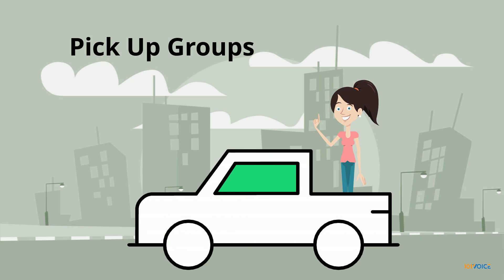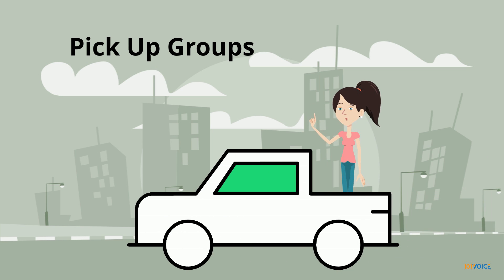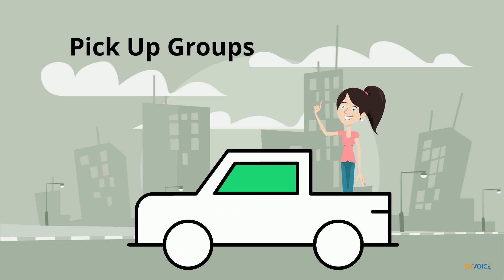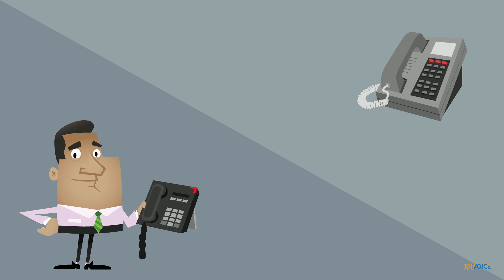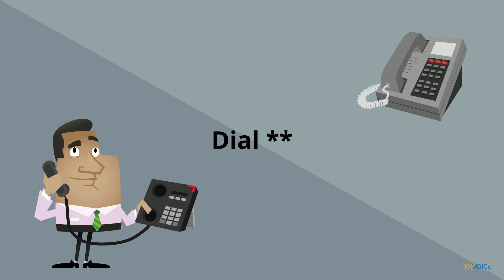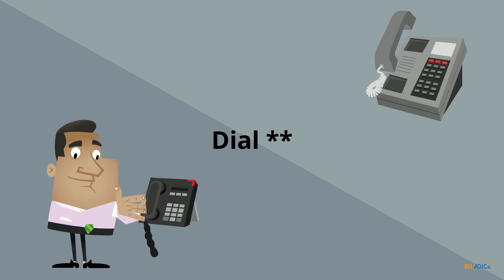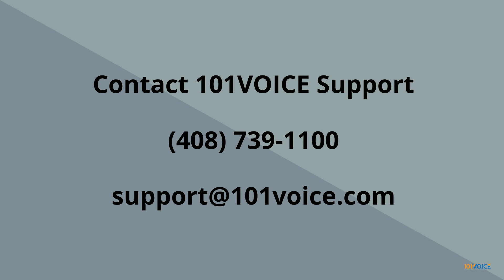Pickup groups allow you to use one phone to answer an incoming call on another phone, as long as both phones are in the same pickup group. While another phone is ringing, simply dial star star to intercept the call. To set up a pickup group on your account, contact 101 Voice Support.